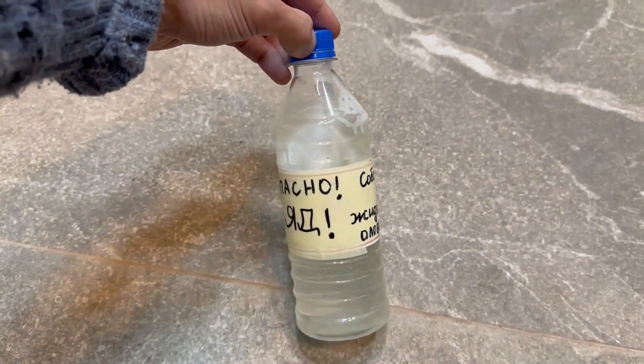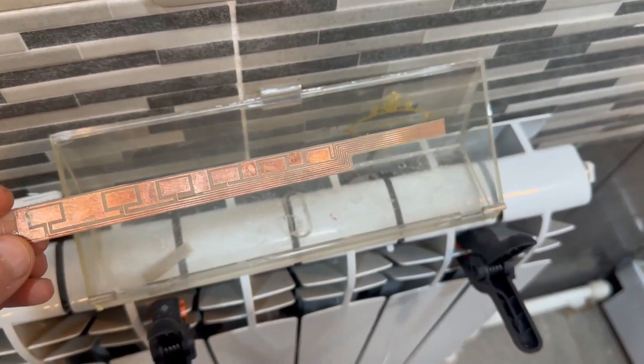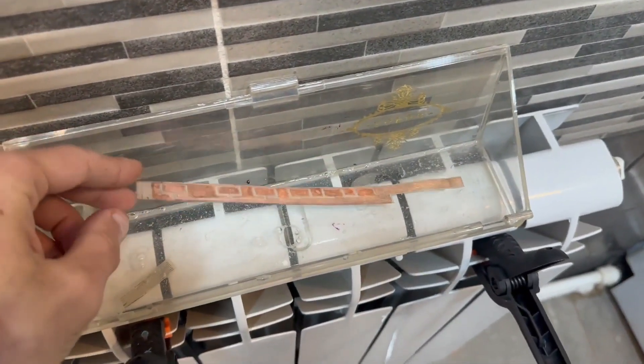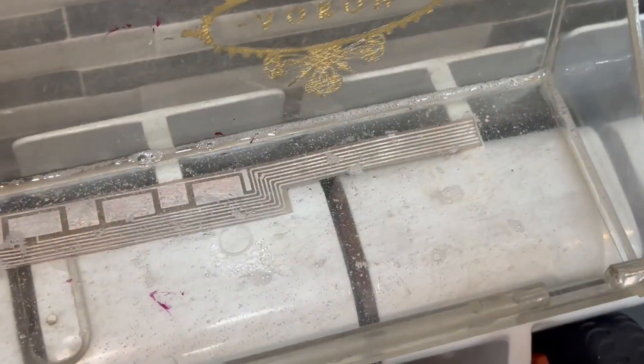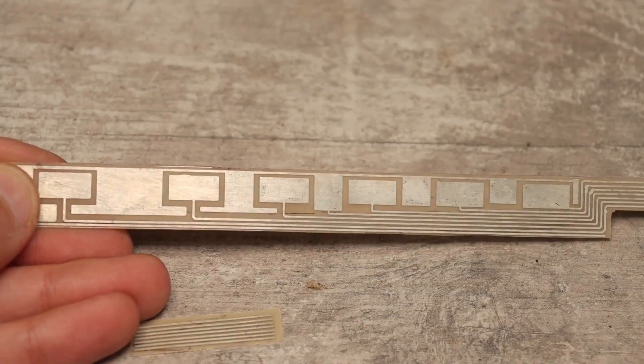I will tin using a liquid tin solution. Place the board in the heated solution and wait a few minutes. The longer you leave it, the thicker the layer of tin will be. Then take it out, rinse it well, and the cable is ready.